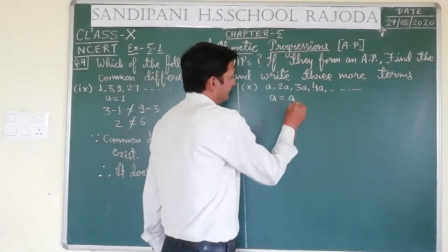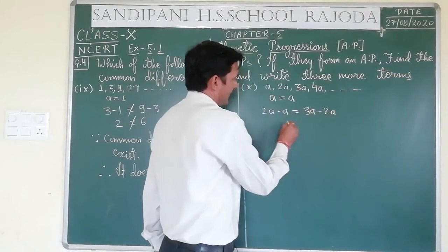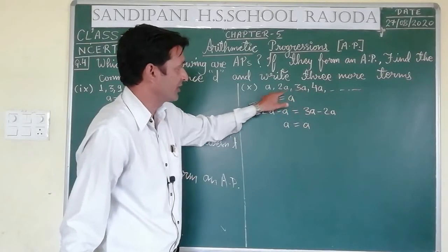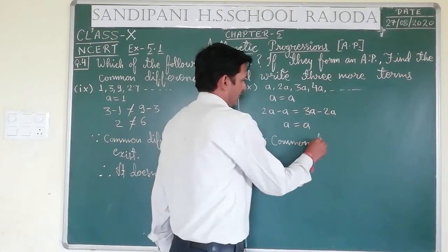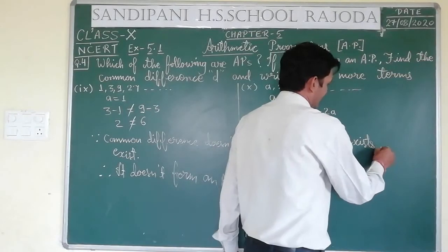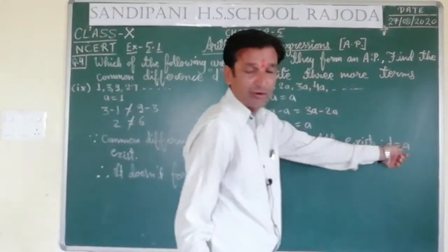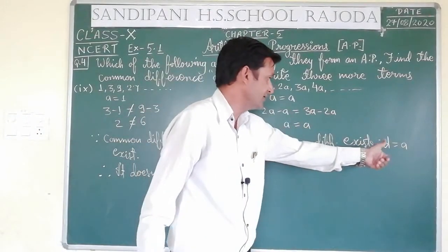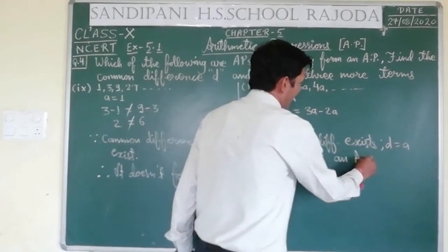In question 10, the first term is A. Subtracting A from 2A gives A, and subtracting 2A from 3A also gives A. They are equal. So the common difference exists and D is equal to A. Therefore, it forms an AP.